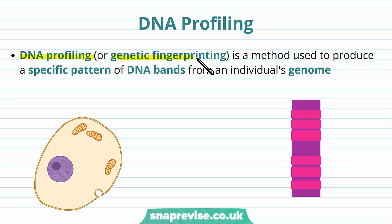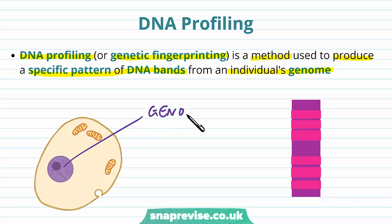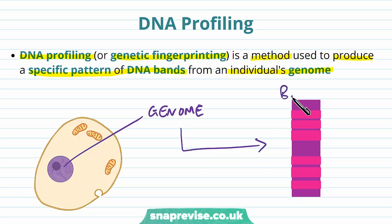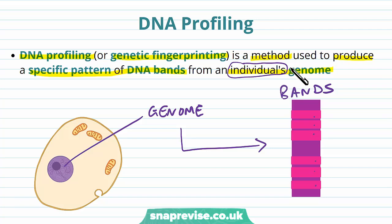DNA profiling, which is also called genetic fingerprinting, is a particular method that we use to produce a specific pattern of DNA bands from an individual's genome. The genome of an individual contains all of the genes and therefore all of the genetic material in the whole cell — the entire code for that individual. Every nucleus in every cell contains the entire set of DNA that you own, and what we can do is make a specific pattern, or a set of bands, which show all of the different sections of DNA in somebody's genome. Every individual is unique and has a different set of DNA, apart from twins, so we call it their genetic fingerprint.